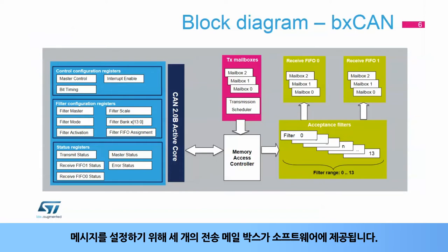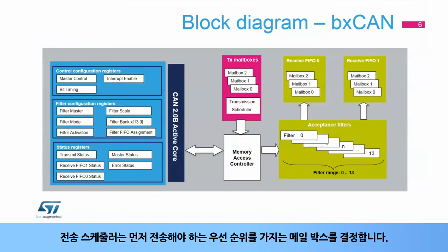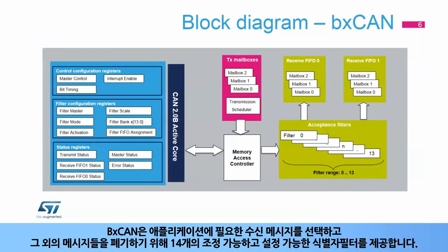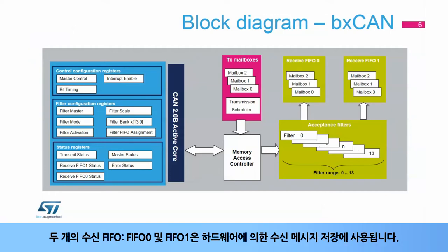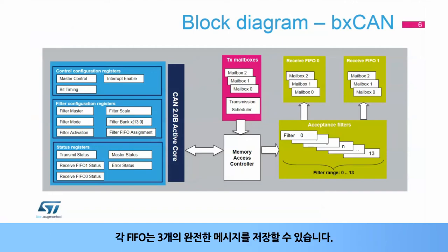Three transmit mailboxes are provided to the software for setting up messages. The transmission scheduler decides which mailbox has priority to be transmitted first. The BX CAN provides 14 scalable and configurable identifier filters for selecting the incoming messages the application needs and discarding the others. Two receive FIFOs — FIFO 0 and FIFO 1 — are used by hardware to store incoming messages. Each FIFO can store three complete messages.